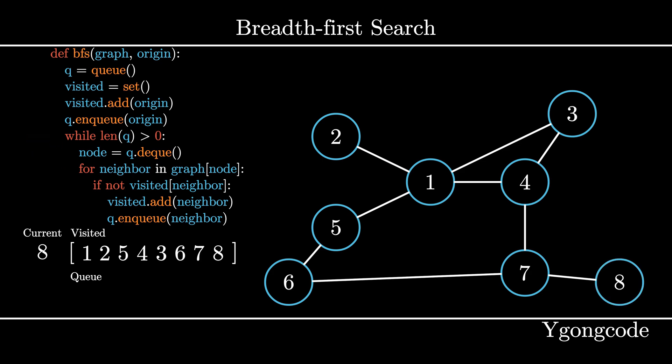At the end, our queue is empty, which means that we have searched through all of the nodes in the graph. Take a look at our visited set, which is ordered by the time visited in this simulation. Notice how the nodes 2, 3, 4, 5 are searched before nodes 6 and 7, which are searched before node 8.